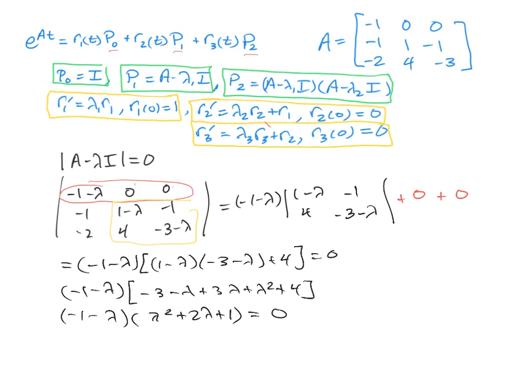And this factors as lambda plus 1 to the third power equals 0, with a negative sign in front. So lambda 1 and lambda 2 and lambda 3 are all equal to negative 1.